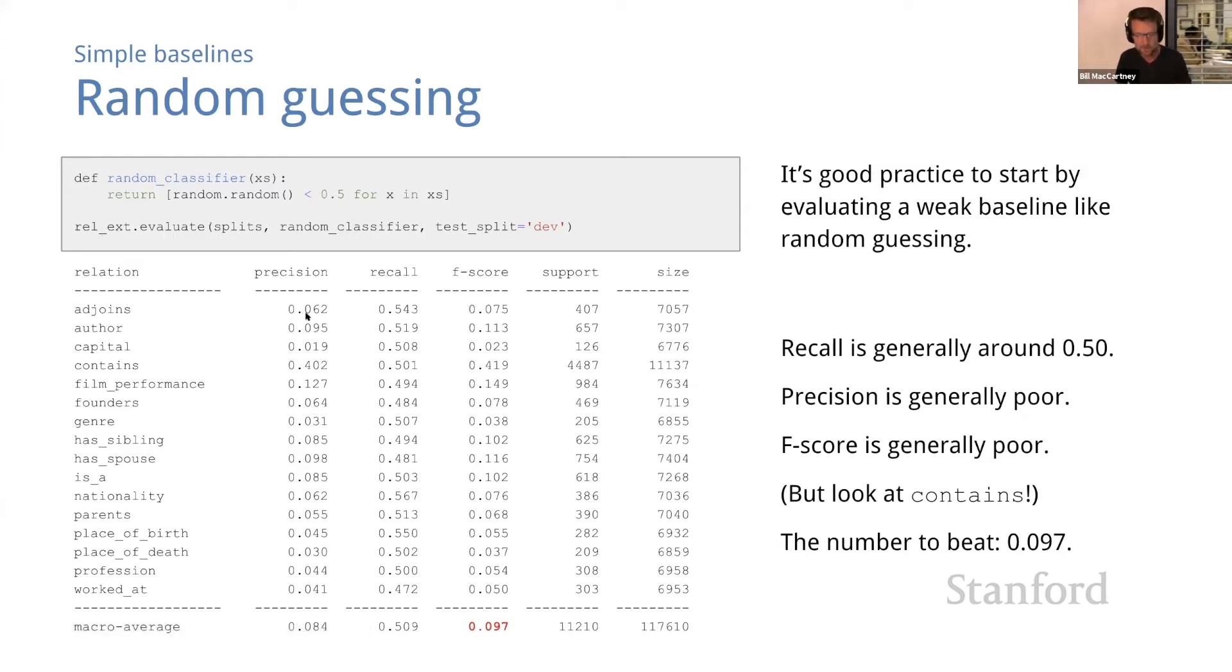For each one we have precision, recall, F-score—remember that's F 0.5 which gives more weight to precision than to recall—we have the support which is the number of instances whose actual label is true, and we have size which is just the total number of instances. We find that recall is generally right around 0.5, and this makes sense because we predict true about half the time since we're just flipping a coin.